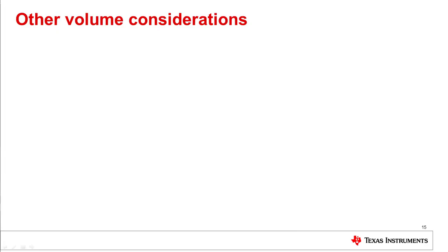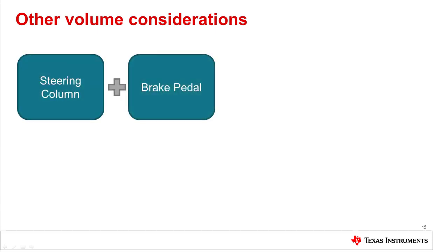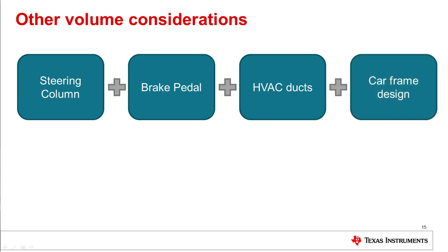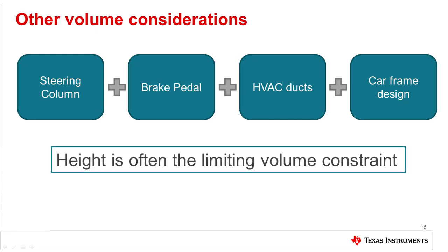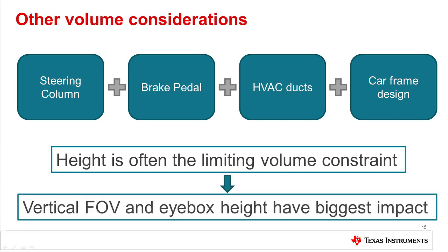Total volume is not the only consideration when fitting an AR HUD system into a vehicle. There are often other systems using the same space under the dashboard, including the steering column, brake pedal, HVAC ducts, and the car frame. Because most of these components limit the vertical space available, height is often the limiting constraint, not just total volume. Vertical FOV and eye box height have the greatest impact on overall HUD height, and can often be traded off for a smaller volume system.